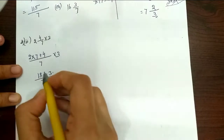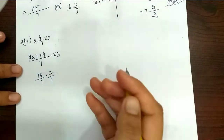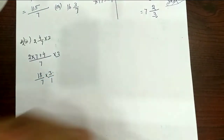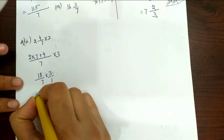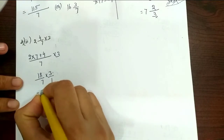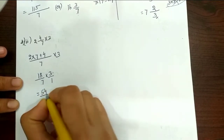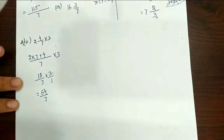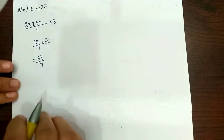So cancel here — cancel is done. Multiply is done. 18 times 3 is 54, by 7. So 54 by 7 is the result. Here the fraction needs to be converted — 54 by 7.